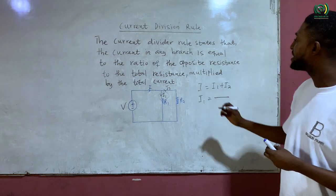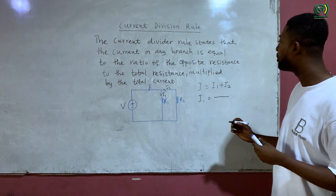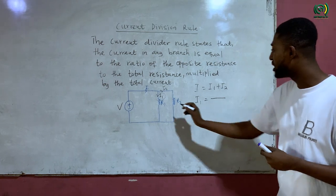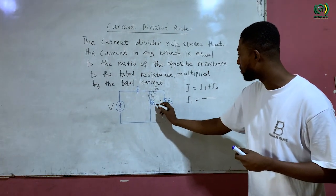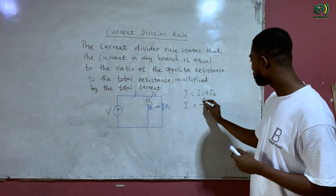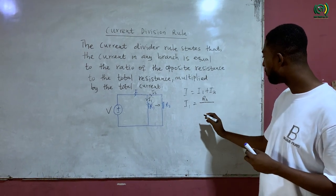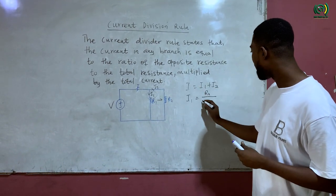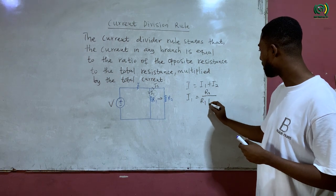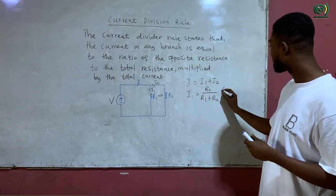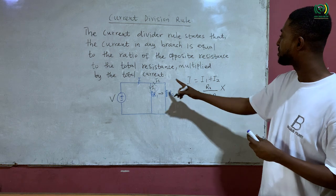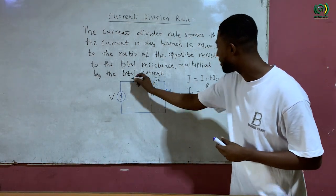So the current in any branch is equal to the ratio of the opposite resistance. So the opposite resistance of R1 is R2 over the total resistance which is R1 plus R2 multiplied by the total current, and the total current is I.